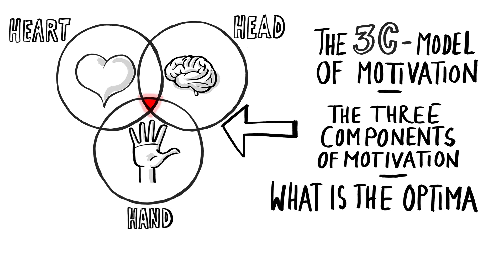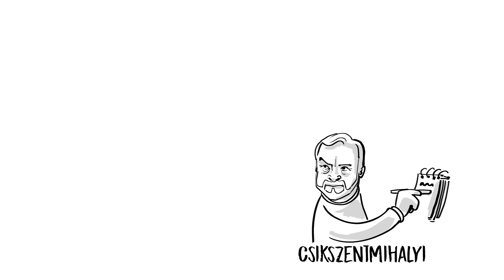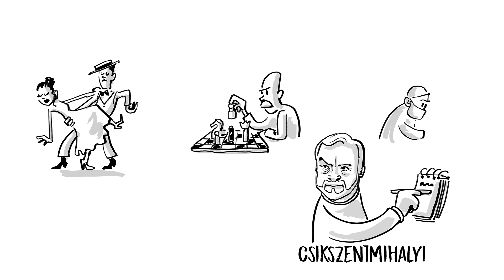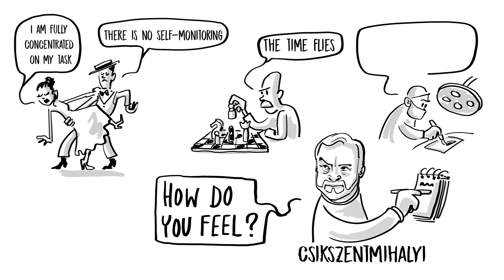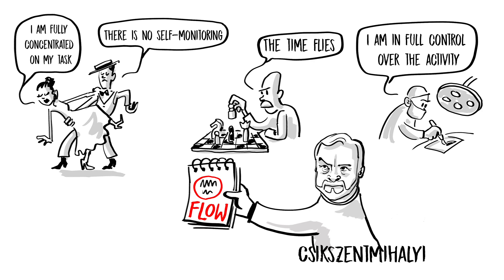Csikszentmihalyi, a Hungarian researcher who works in the States, studied people with high motivation. Tango dancers, chess players, surgeons. He asked these people, how do you feel when performing this activity? And he received pretty much the same answers from all. I am fully concentrated on my task. There is no self-monitoring. The time flies. I am in full control over the activity. Csikszentmihalyi called this experience flow. And he suggested that flow is the secret to happiness. Research shows that it is most critical for flow that your heart is in it.